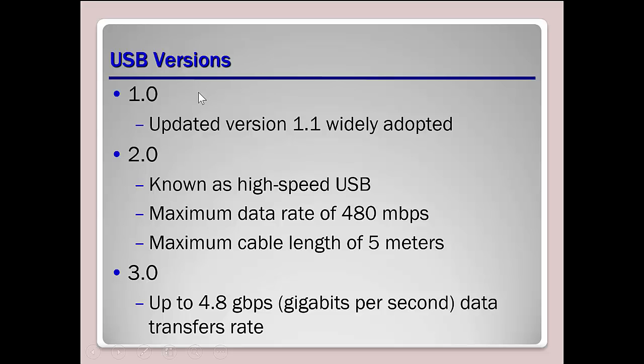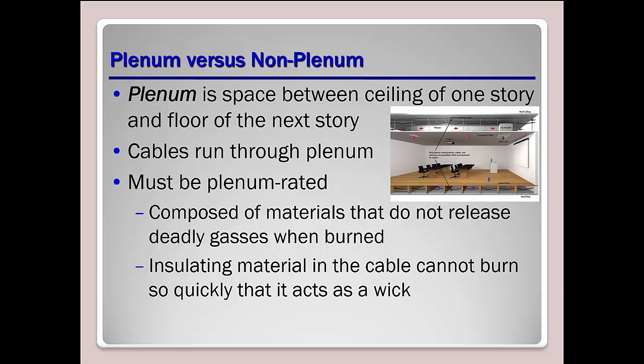USB versions: 1.0, 2.0 with a maximum data rate of 400 megabits per second, and now 3.0 at 4.8 gigabits per second — a huge difference. A great way to really understand the difference is to back up your computer on a 2.0 drive and then on a 3.0 drive and see how long each takes.